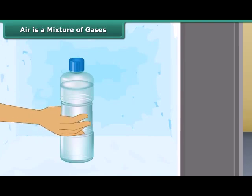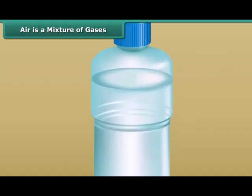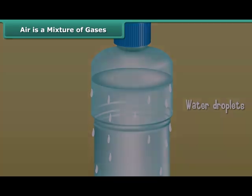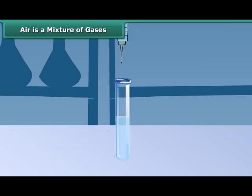When you take out a water bottle from the freezer, some water droplets appear on the outer surface of the bottle. Where do the water droplets come from? Is water leaking through the bottle? No, it's not the case. Water vapor present in the air turns back into liquid when it touches the cold outer surface of the bottle. This proves air contains water vapor.